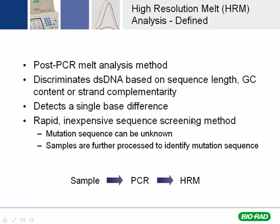If you're planning on screening large populations of samples where you want to determine if one sample has a polymorphism or methylation or whatever versus another sample, or versus samples from another population — so you're trying to discriminate between or sort populations — this is a good way to go.